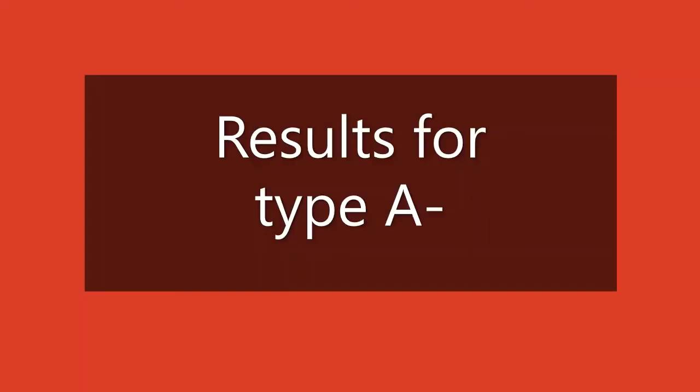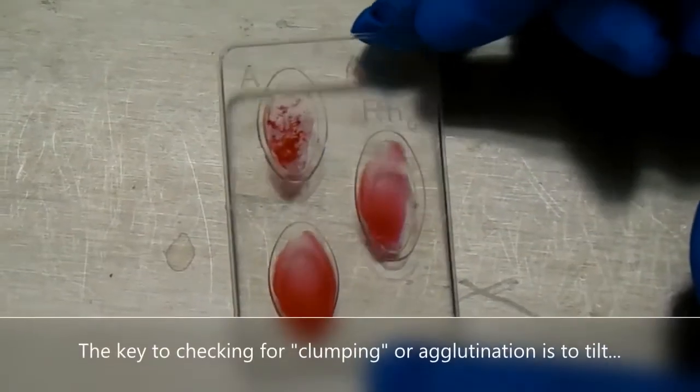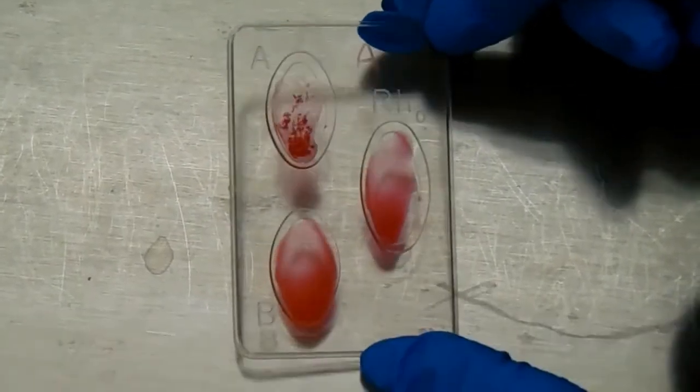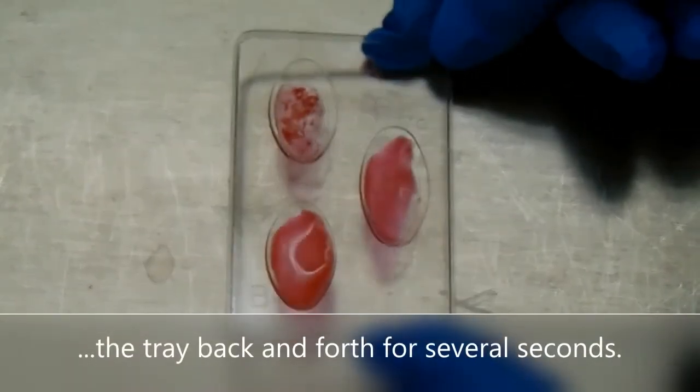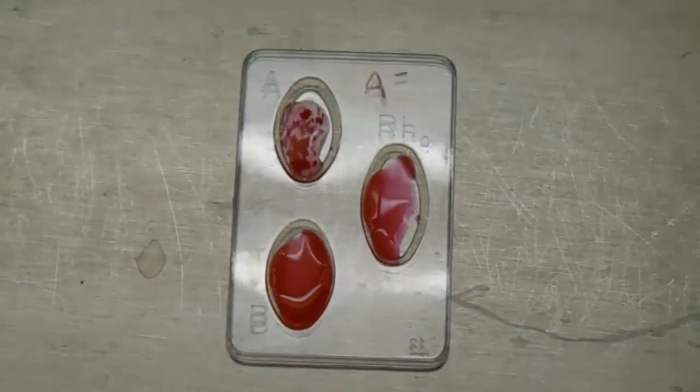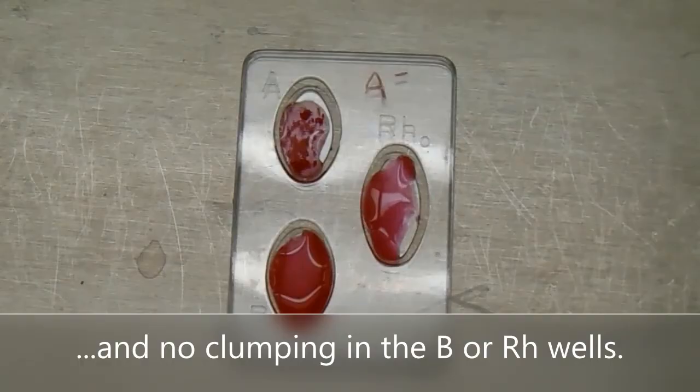Results for type A negative. The key to checking for clumping or agglutination is to tilt the tray back and forth for several seconds. Here we can see large distinct clumps in the A well, and no clumping in the B or RH wells.